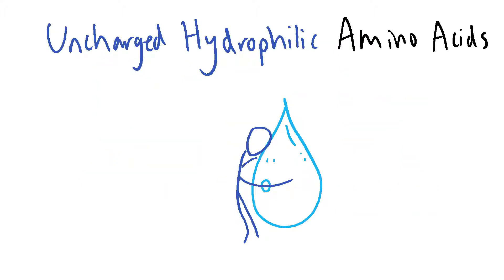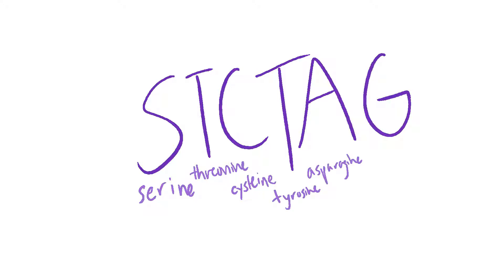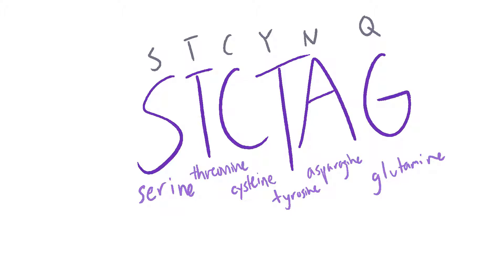Now let's move on to uncharged polar or hydrophilic amino acids. The mnemonic CYTICATAG covers: Serine, Threonine, Cysteine, Tyrosine, Asparagine, and Glutamine. CYTICAYUNK is for memorizing the single letter abbreviations: S for serine, T for threonine, C for cysteine, Y for tyrosine, N for asparagine, and Q for glutamine.